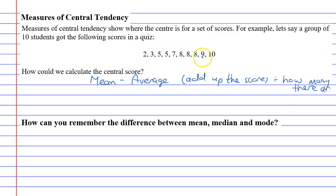If we were to do that for the following scores, we would add them up. I did that earlier, which gave me 65. I would divide by how many scores there are—there are 10 scores. 65 divided by 10 gives me 6.5, meaning the average score in this class was 6.5.